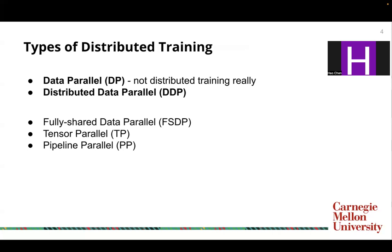You should note that data parallel is actually not really distributed training, but it allows you to use multiple GPUs. And there are other types of distributed training supported in PyTorch, which is fully shared data parallel. It splits your model into different processes in tensor parallel and pipeline parallel. If you are interested in these other types of distribution, you should check by yourself.